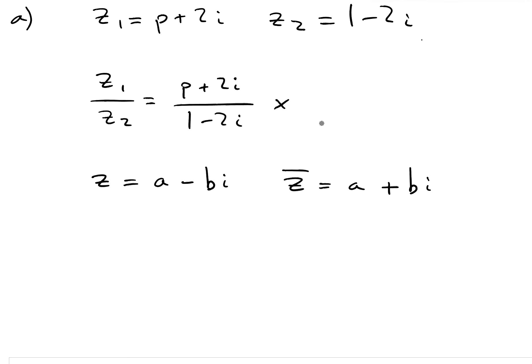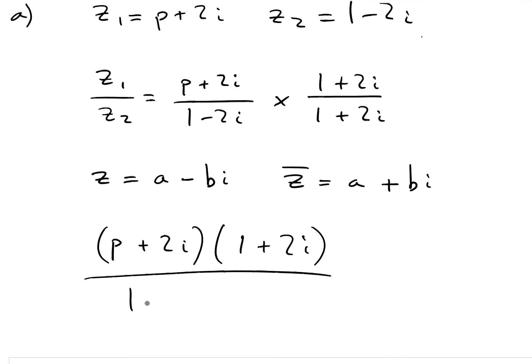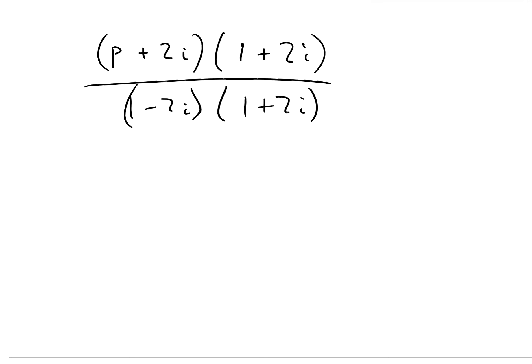We want to multiply by the conjugate of the bottom. It's 1 minus 2i, so its conjugate is going to be 1 plus 2i. Remember, whatever we do to the bottom we also have to do to the top, because effectively we're multiplying by 1 — the top and bottom both reduce to 1. So we multiply the top and bottom by 1 plus 2i.